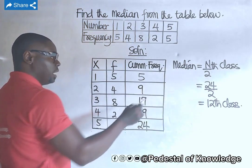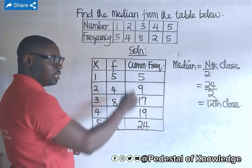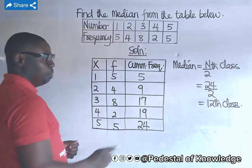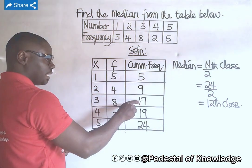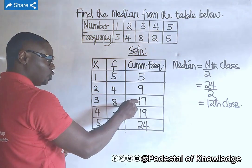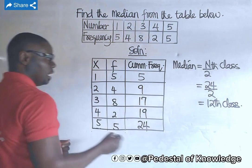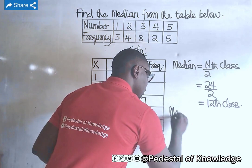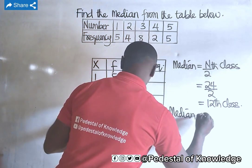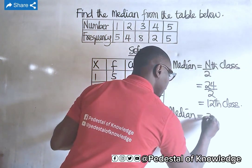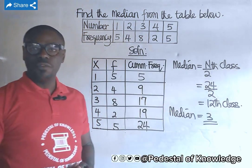Now, if you look at the cumulative frequency column, you are going to see that there is no 12th value listed directly. But that 12th belongs to the class with cumulative frequency of 17. So we trace it back to the number x, and therefore the median of that frequency distribution is equal to 3. And that is the answer.